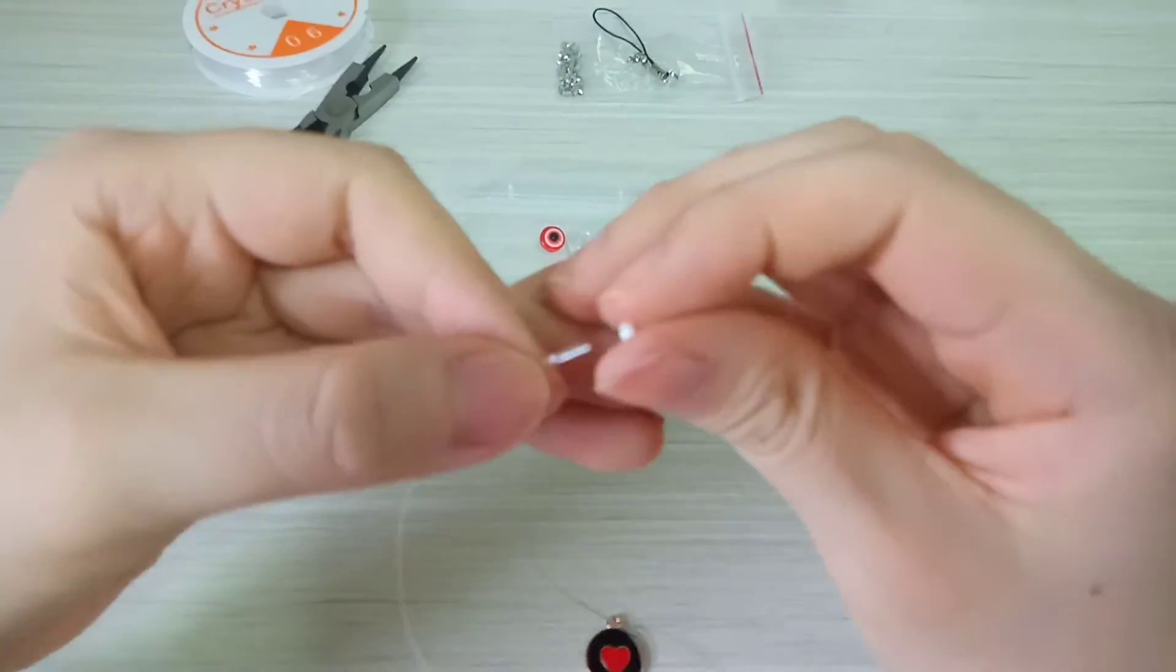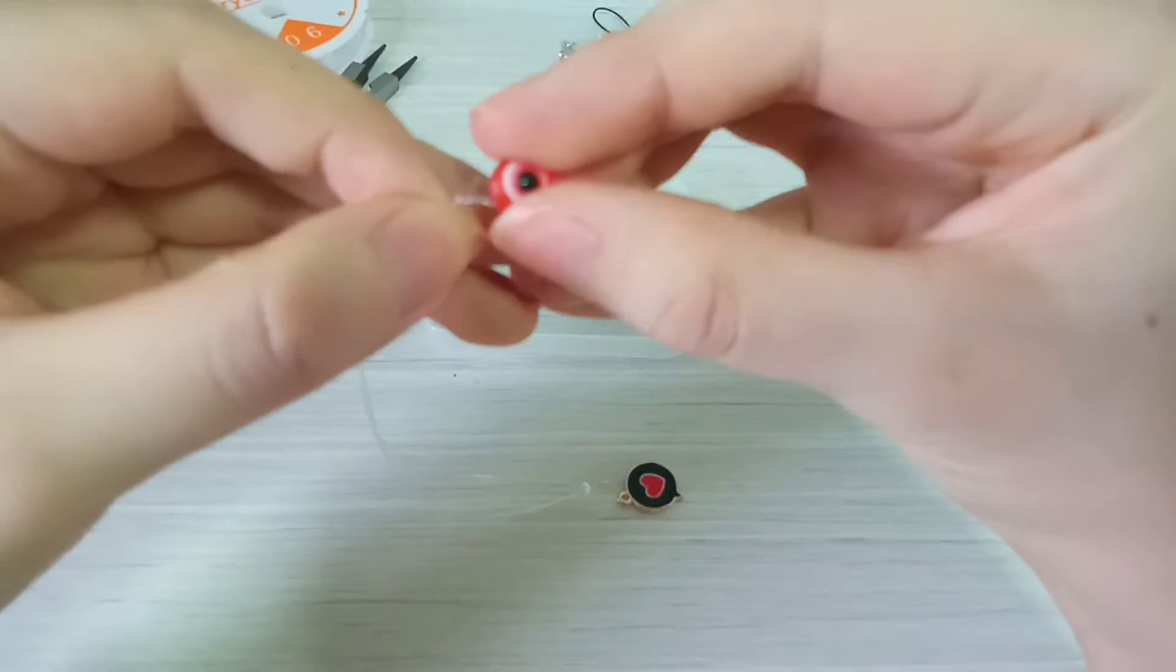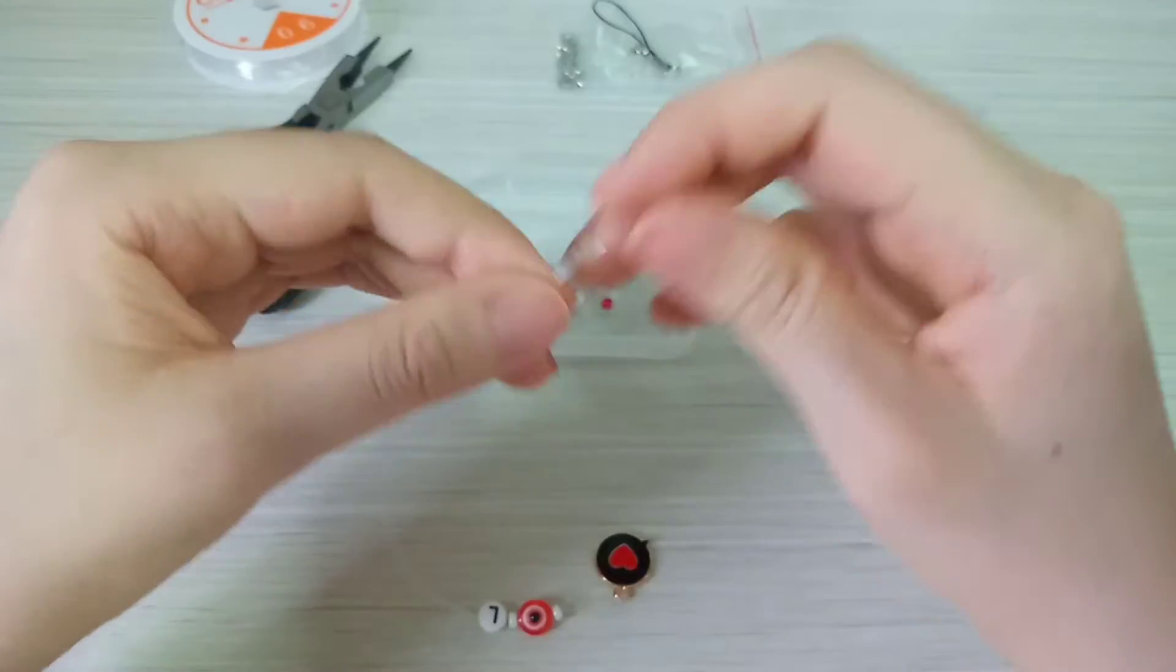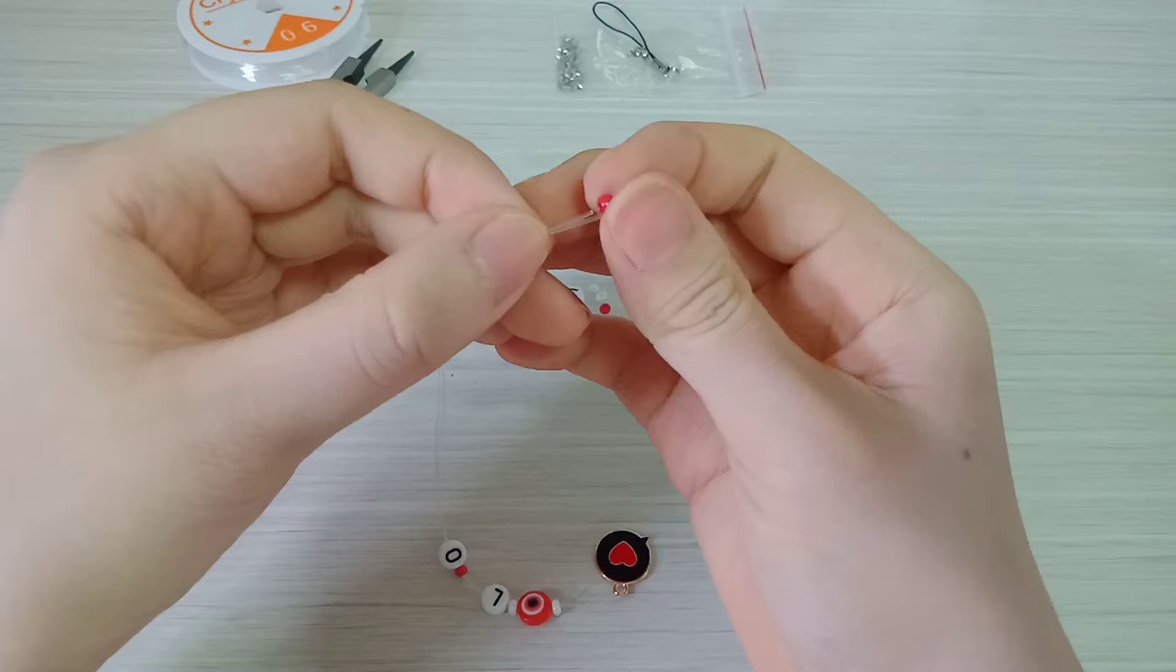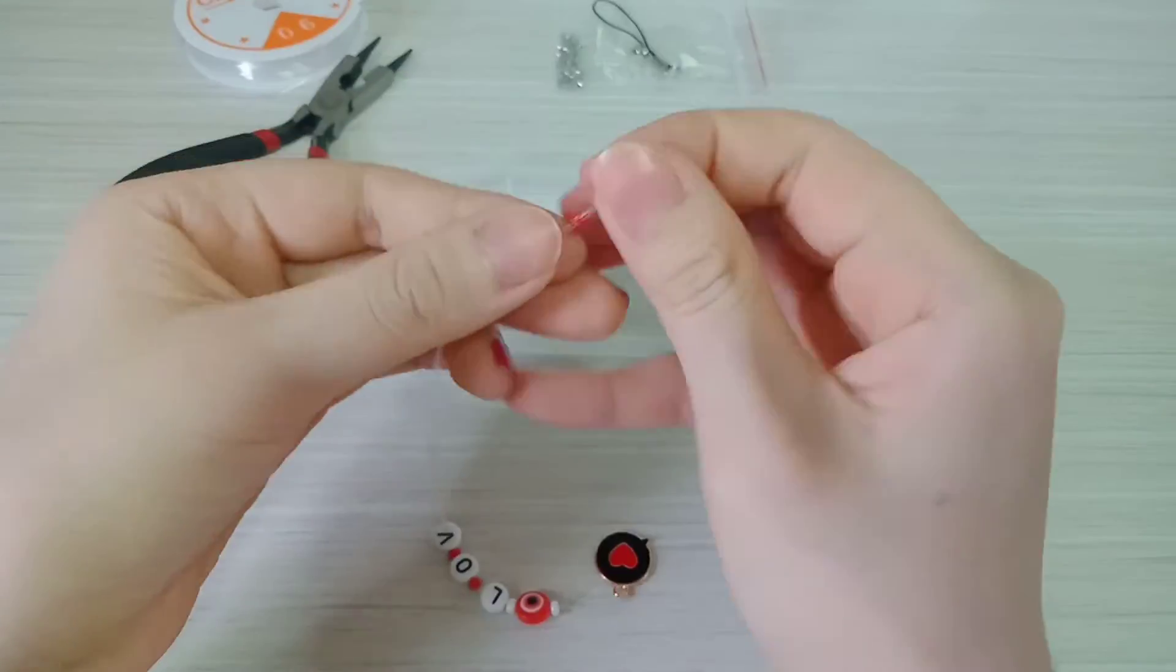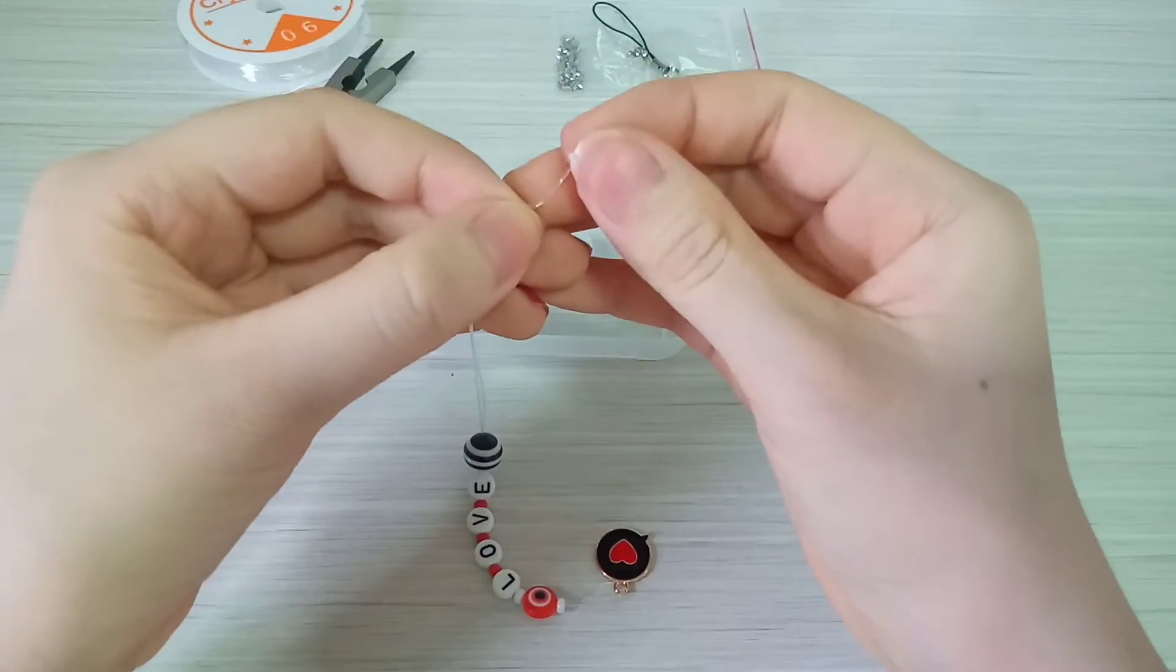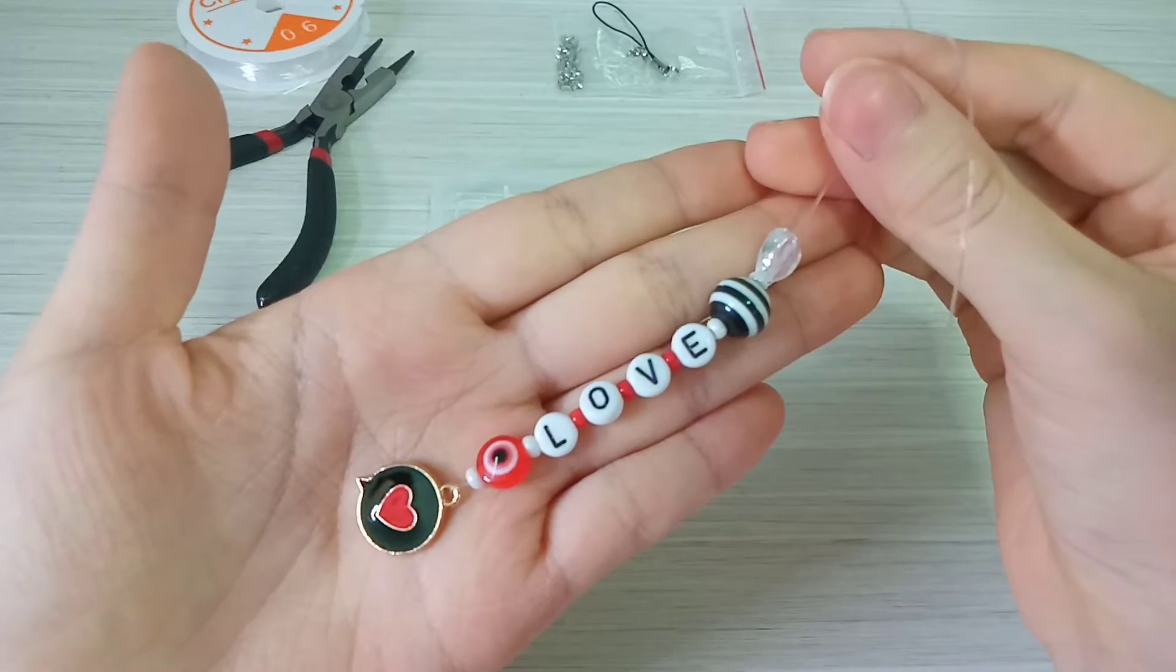The next part is very simple. You just need to continue adding beads into your string, but remember this time you have to put it through both of the ends of the string. In this process, you can use any kind of beads that you like. Here I use a combination of small beads, big beads, and also alphabet beads to make the word 'love' because I think it looks adorable and I just want to match my phone case with this look.